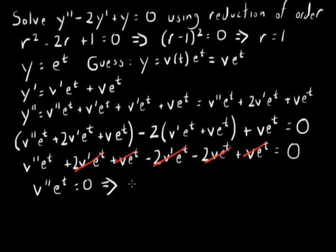Well, e to the t is never equal to 0. So that means v double prime equals 0. Still second order, but a lot easier to solve. If we take one step, that means that the first derivative of v must be a constant. Let's call that c1. And if we take one more step, then we can solve for v. v is going to be c1t plus another constant, c2.